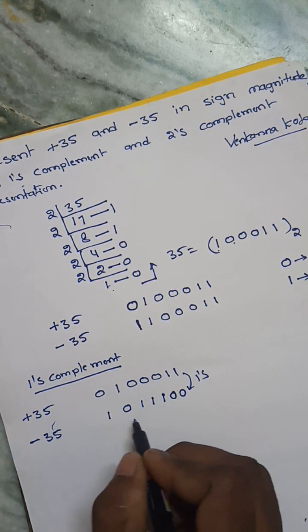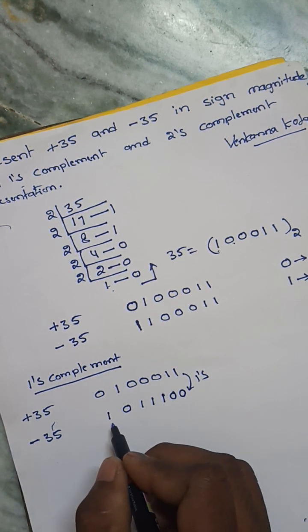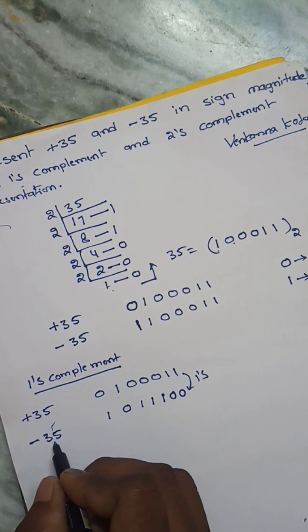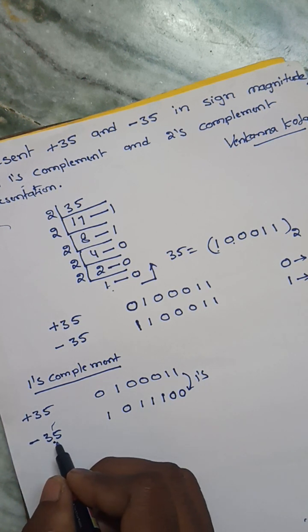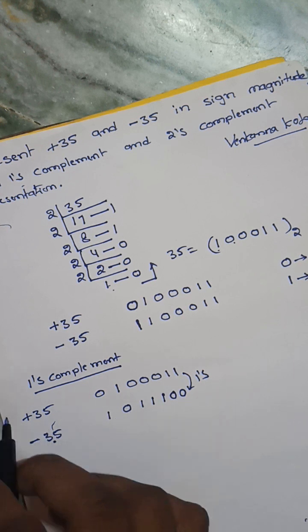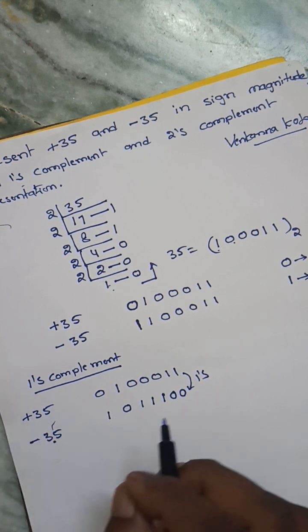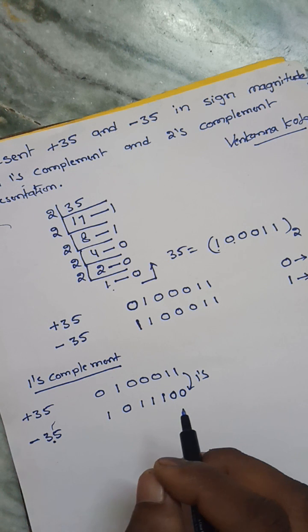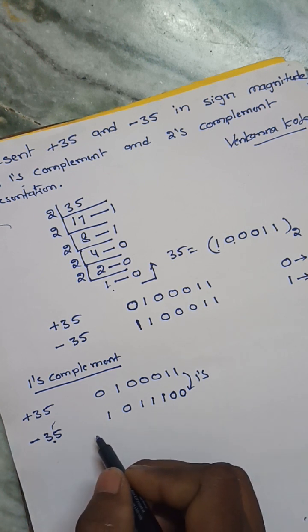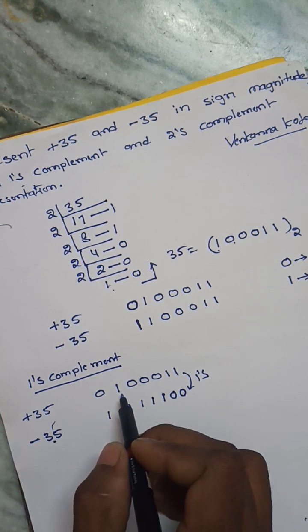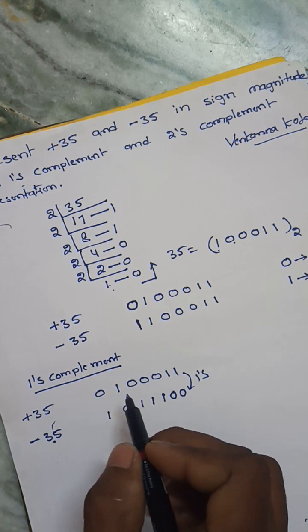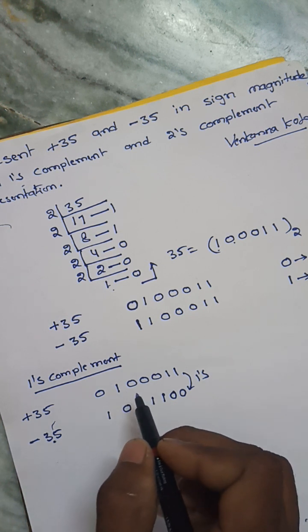Continuing the one's complement: complement of 1 is 0, complement of 1 is 0. So this is the representation of one's complement for minus 35. No change for plus 35 — plus 35 remains the same in one's complement.